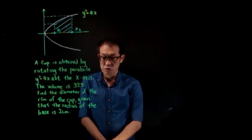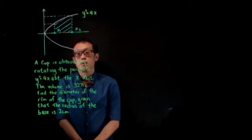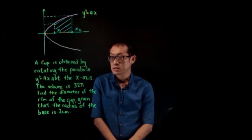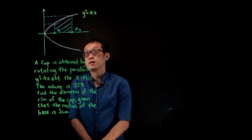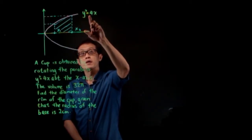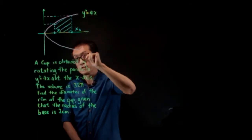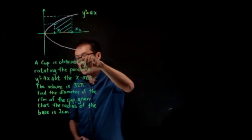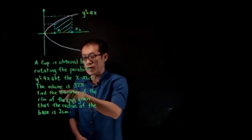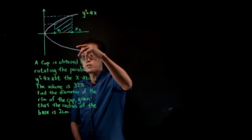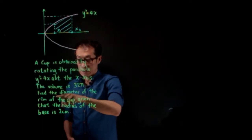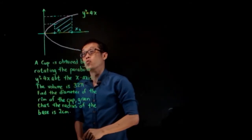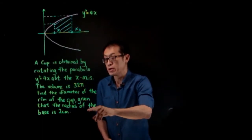Good afternoon. We have come to another question on application of integration. In this question, you're given the graph y² = 4x. A cup is obtained by rotating this parabola about the x-axis. The volume generated is 32π. Find the diameter of the rim of the cup, given that the radius of the base is 2.